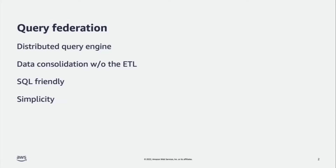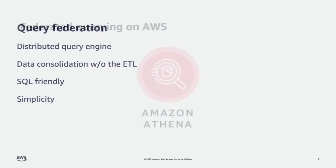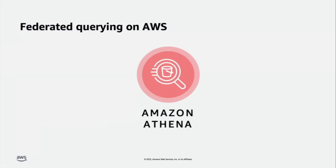AWS supports federated querying via two data analytics services. The first one is Amazon Athena. It's a serverless interactive query service that can process unstructured, semi-structured, and structured data sets. It uses Presto under the hood with full standard SQL support and works with a variety of standard data formats such as CSV, JSON, ORC, Parquet, Avro, and so on.